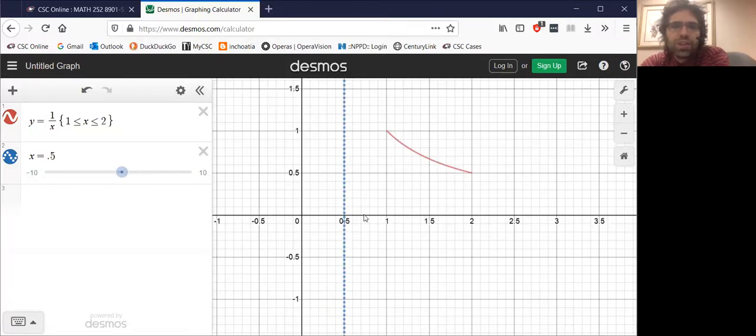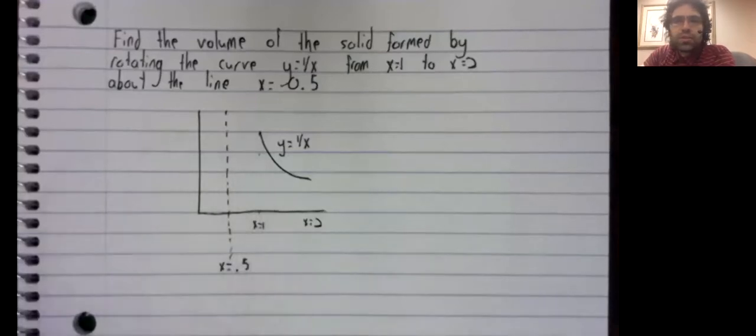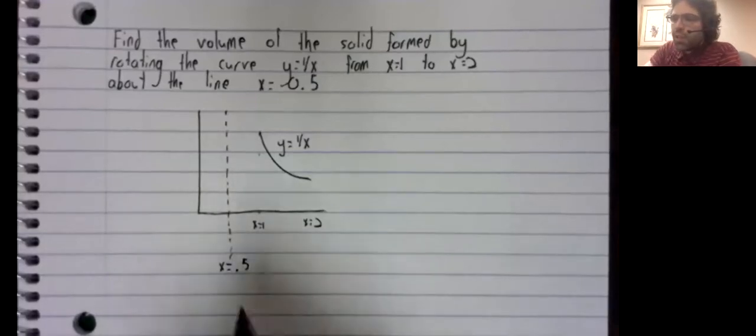We see here in red, the curve y equals one over x from one to two. And we see this dotted line in blue, the line we are rotating around. Here's a copy of that picture.